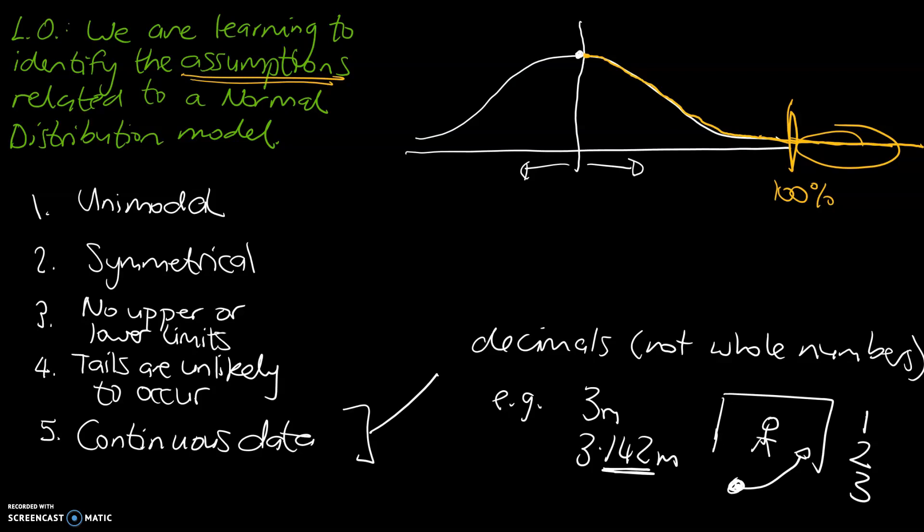You can never have 1.5 goals. You can never have 2.75 goals. And because it's only measured in whole numbers, that means this would not be continuous data. That would actually be an example of discrete data.